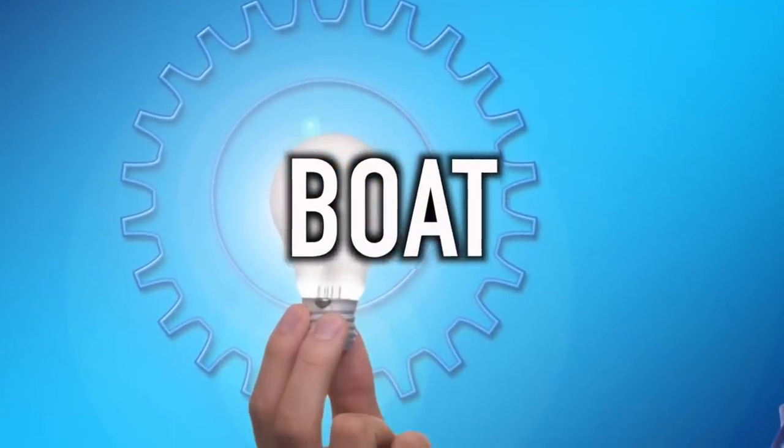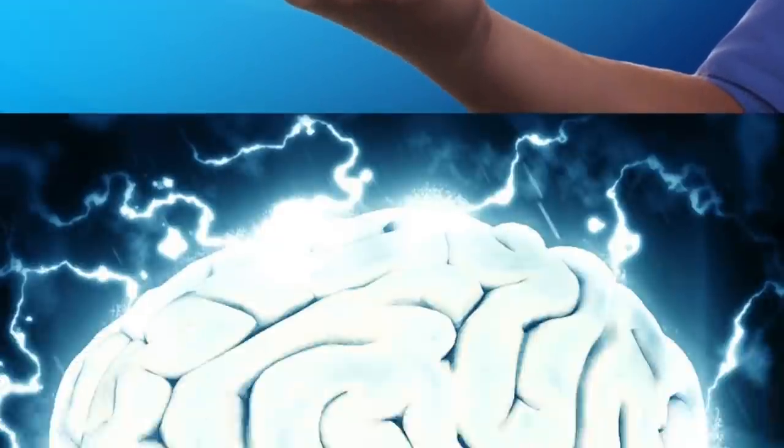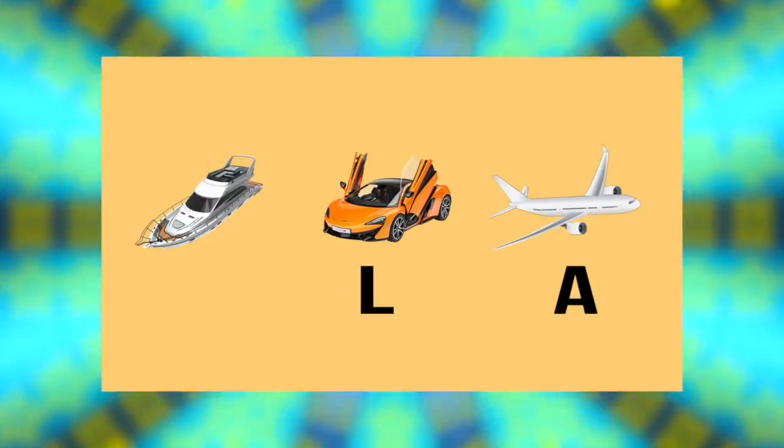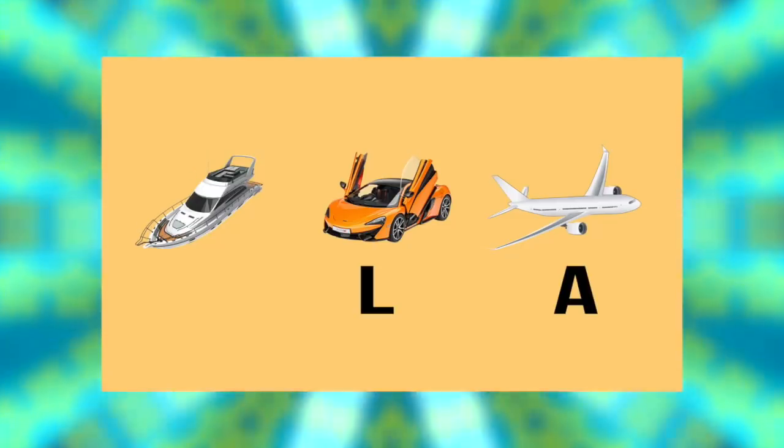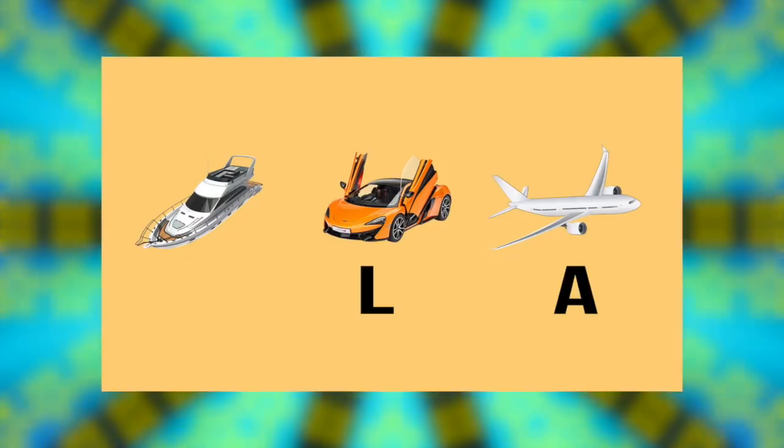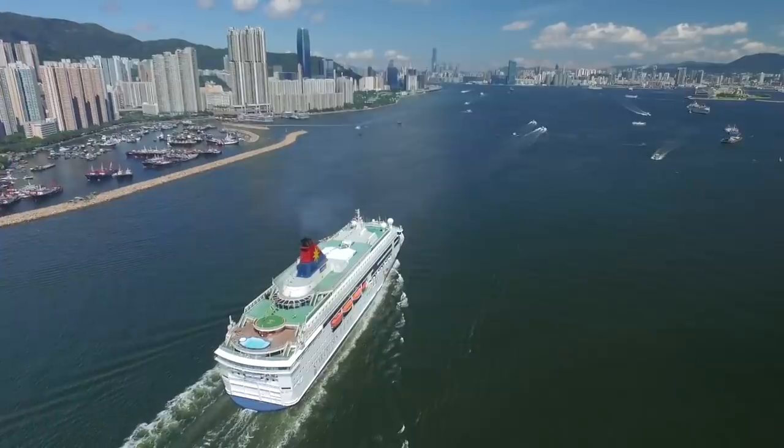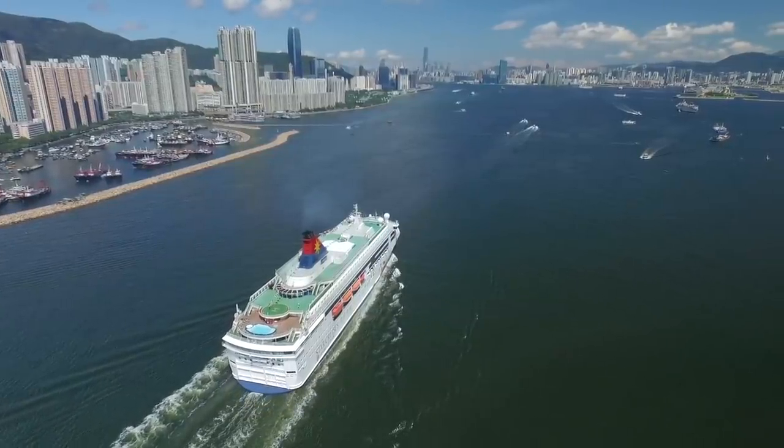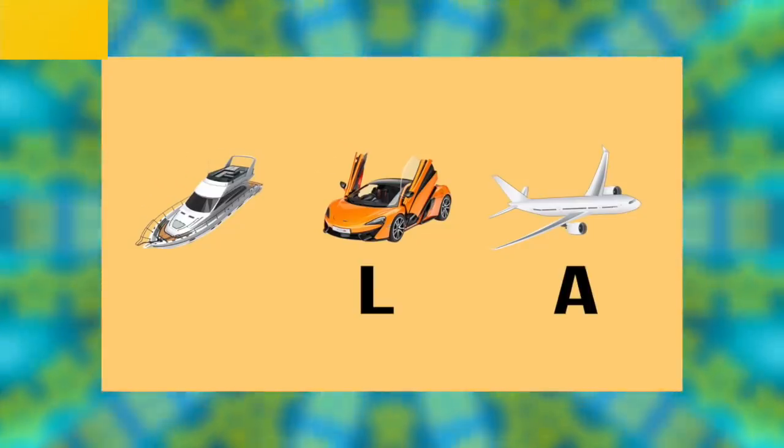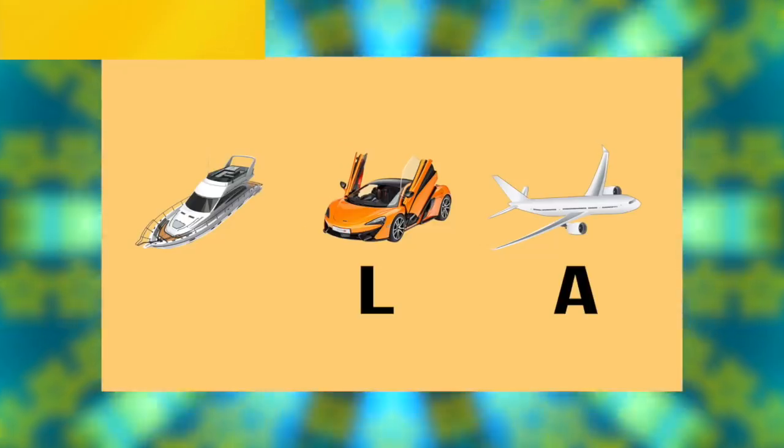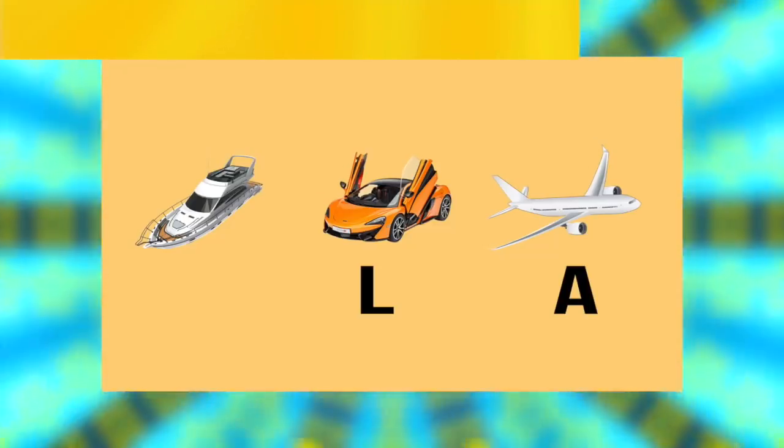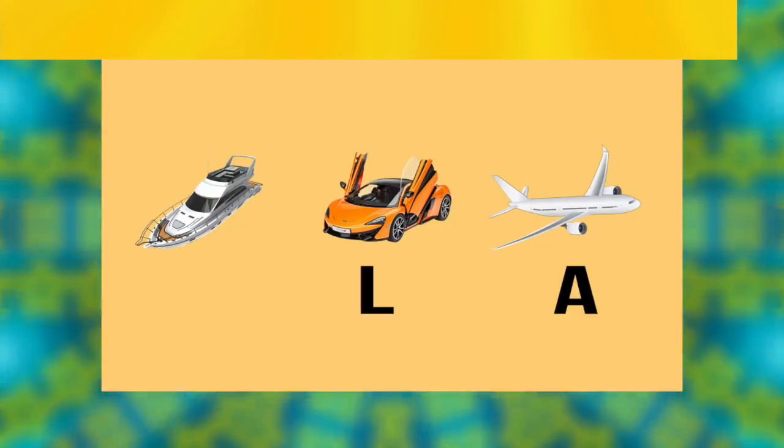Next up is boat. Take a look at this genius riddle. This is a logic riddle which really tests your intelligence if you get it right. As you can see, there's a boat, a car, and an airplane. Underneath the car is the letter L, underneath the airplane is the letter A, but what letter goes underneath the boat? I'll give you a hint: it's not B. Remember, guys, you have to use logic and knowledge to get this one right. I'll put 10 seconds up on the clock right now.